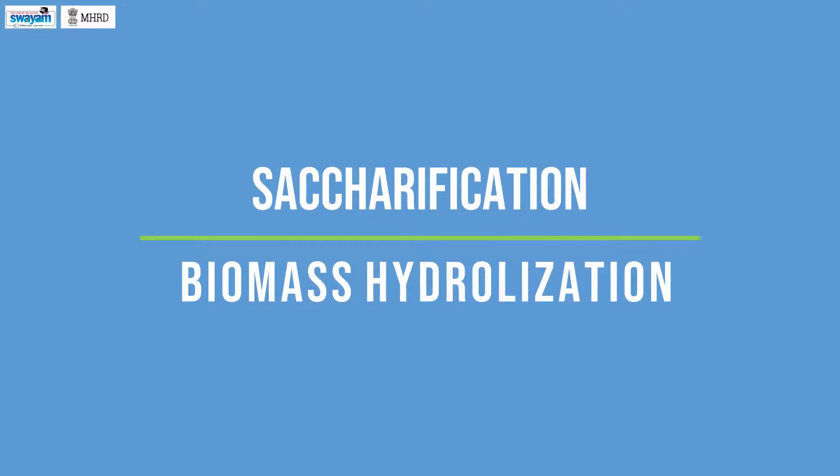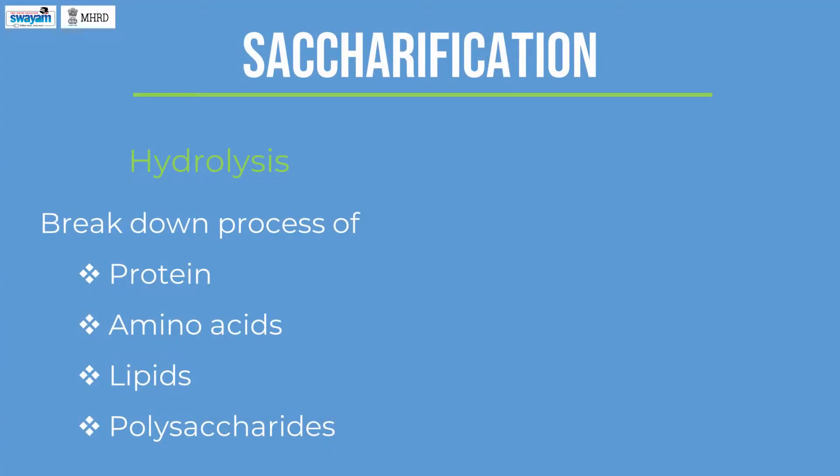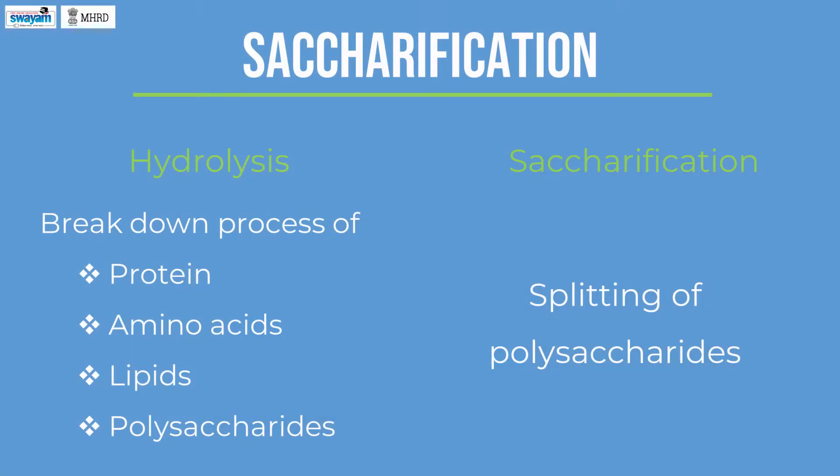Saccharification. The hydrolysis of polysaccharides to their monomer sugar units is called saccharification. Hydrolysis is a broad term covering the breakdown process of all complex molecules of biomass like proteins, amino acids, lipids, and including polysaccharides. Whereas saccharification is restricted to the splitting of polysaccharides of biomass. It literally means to make into sugar.